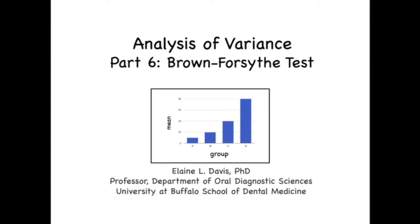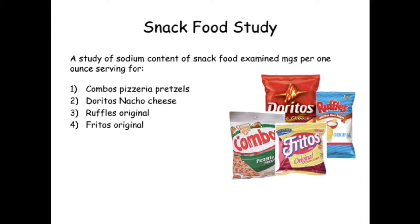This video provides an example of the Brown Forsyth robust ANOVA. Researchers studied the sodium content of four popular snack foods. The independent variable is snack food, and the dependent variable is milligrams of sodium per serving.